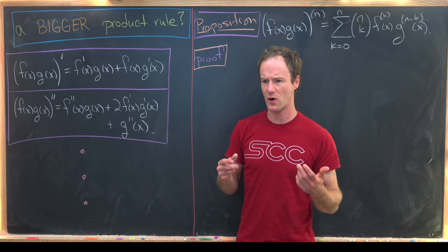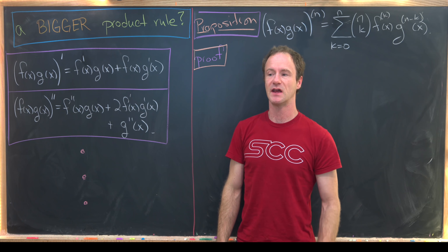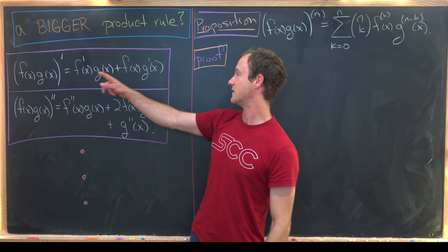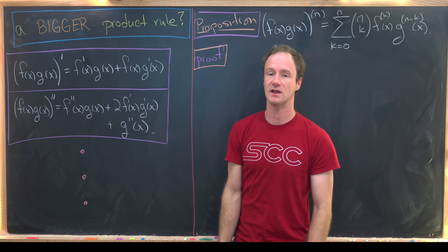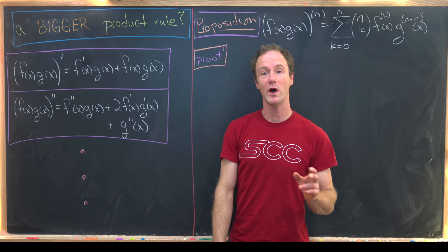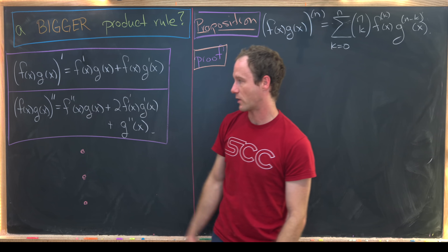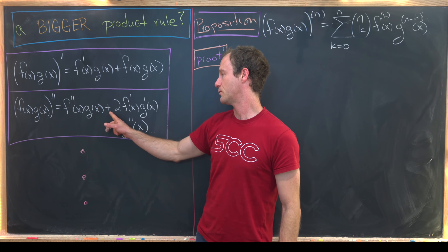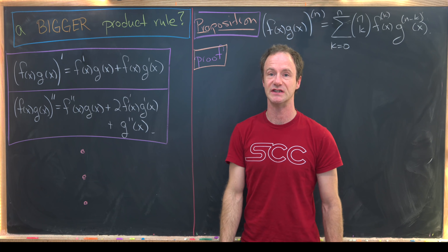You might ask: is there a product rule for a second derivative? And yes, there is. You can calculate it by taking the derivative of both sides of the first line. What you end up with is (f(x)g(x))″ = f″g + 2f′g′ + fg″.